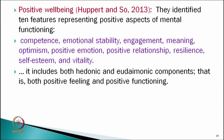Another model by Hooper and colleagues in 2013 is a mixture of previous models with some new additions. They identified positive aspects of mental functioning as: competence, emotional stability, engagement, meaning, optimism, positive emotion, positive relationship, resilience, self-esteem, and vitality. Some of these factors — like resilience, optimism, and vitality — are new additions. They claim this theory has both hedonic and eudaimonic components and propose positive feeling and positive functioning aspects of well-being. Thank you.